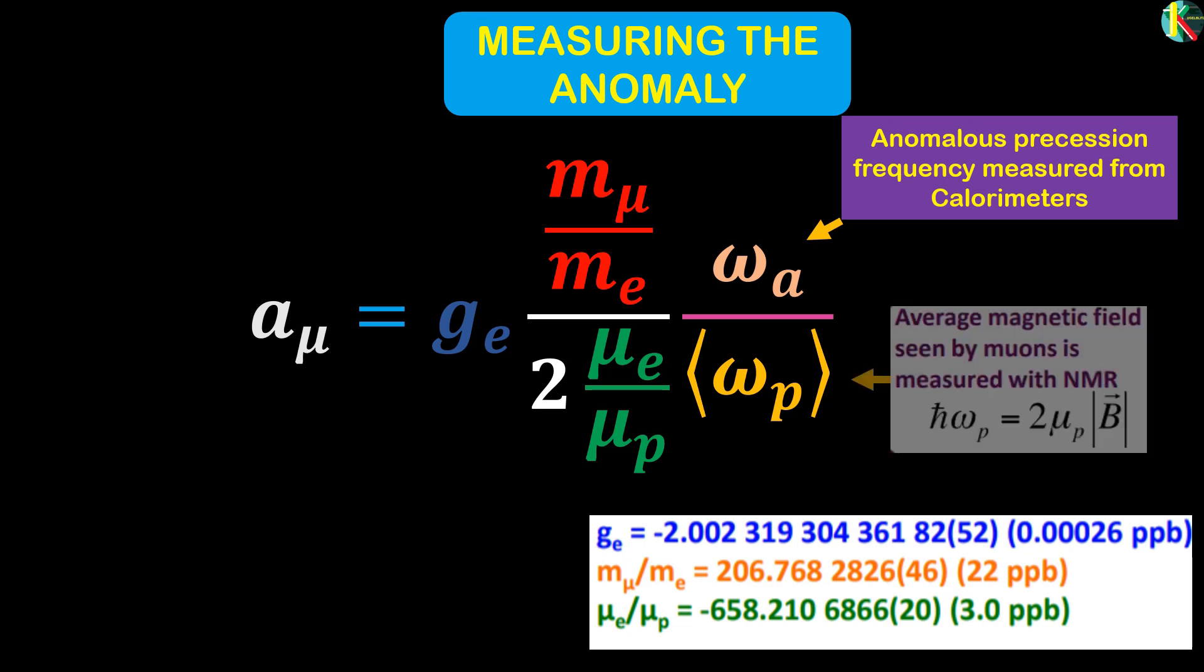The second is the measurement of the magnetic field along the muon's path derived from the precession frequency omega-p of protons contained in a fixed and movable NMR probe.